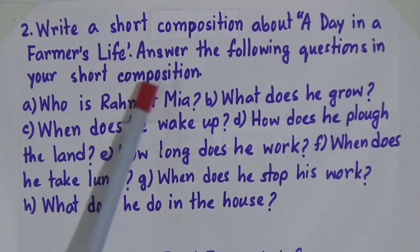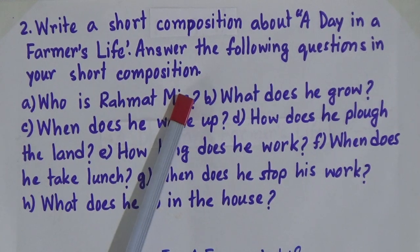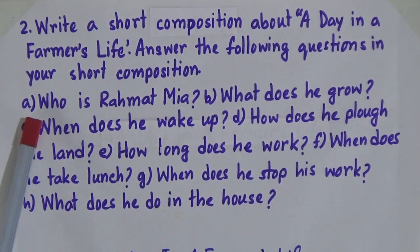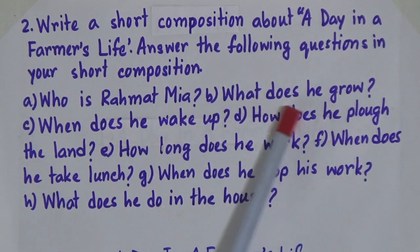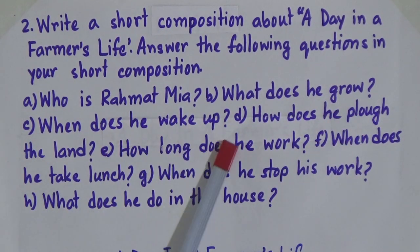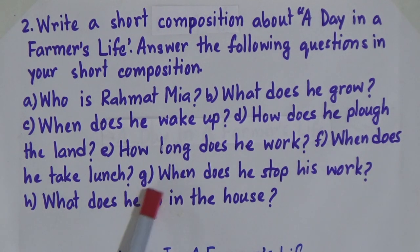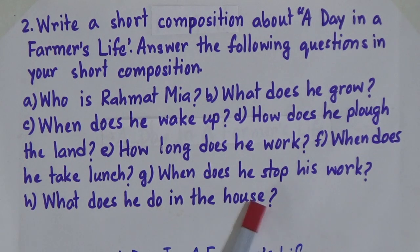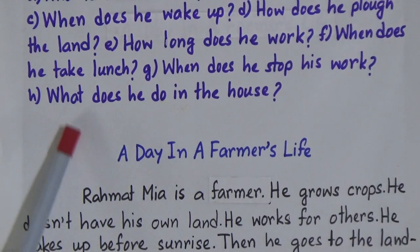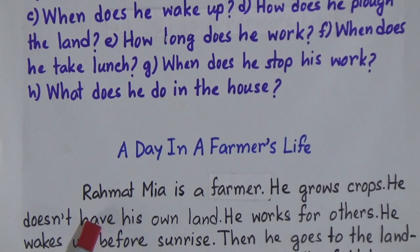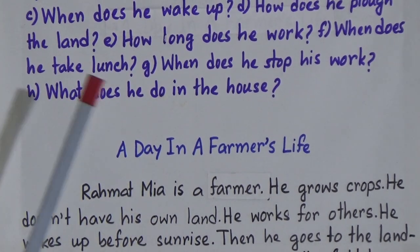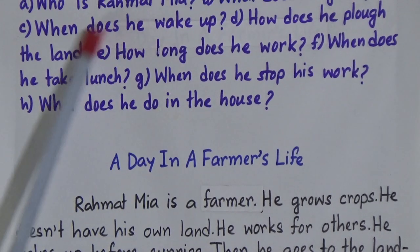Now we will go to the next composition. Number 2: write a short composition about a day in a farmer's life. Answer the following questions: who is Rahmat Mia, what does he grow, when does he wake up, how does he plow the land, how long does he work, when does he take lunch, when does he stop his work, and what does he do in the house. We will write our composition answering these questions.